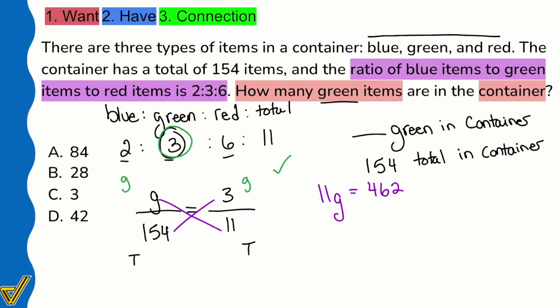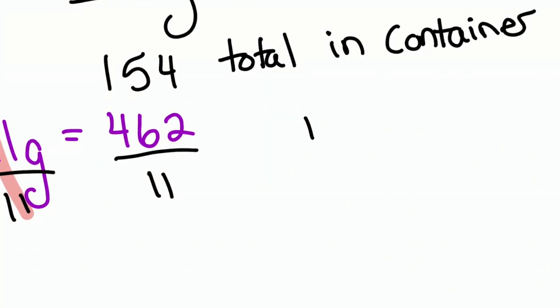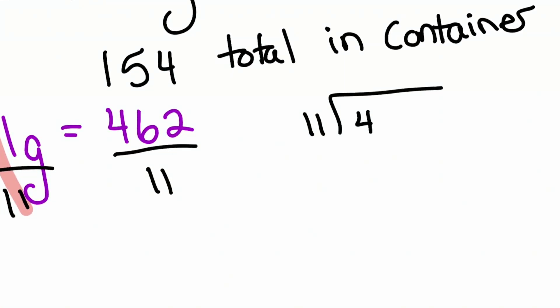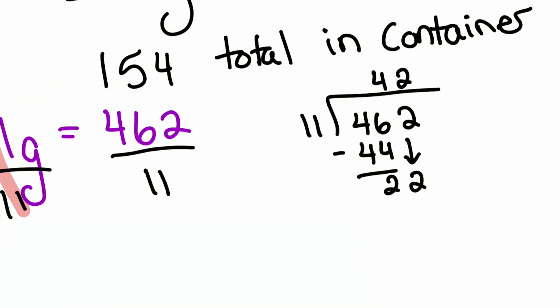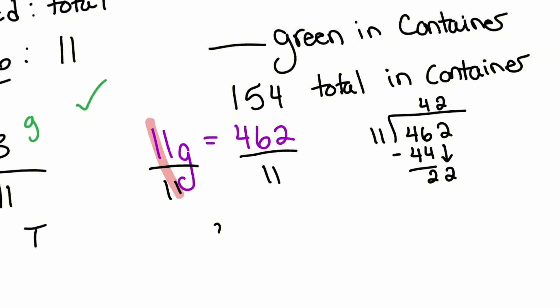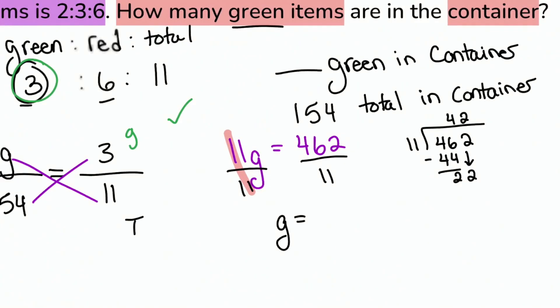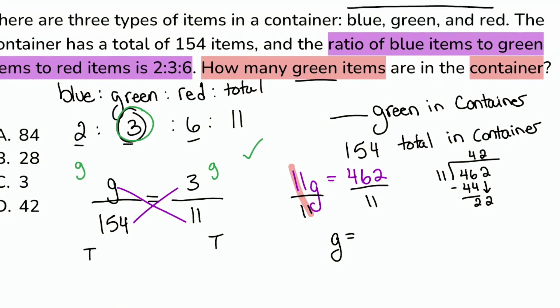From there, what we are going to do is divide and solve. Divide both sides by 11, and let's do some quick long division: 11 into 462. 11 into 46 is 4, then we have 2 left, drop that down. 11 into 22, that's 2. Super quick. The number of green items in this container is going to be 42.